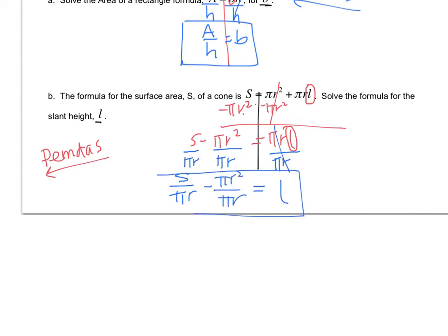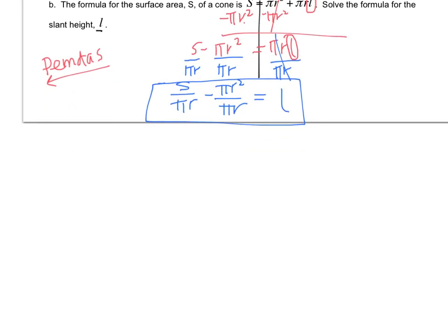Now, this is totally fine, you can leave it, but for those of you that even want a more advanced idea, and this is even too easy for you, we can actually reduce this right here. So we get S over pi r minus, the pi's would cancel, and one of the r's would cancel, so you just have r equals L.